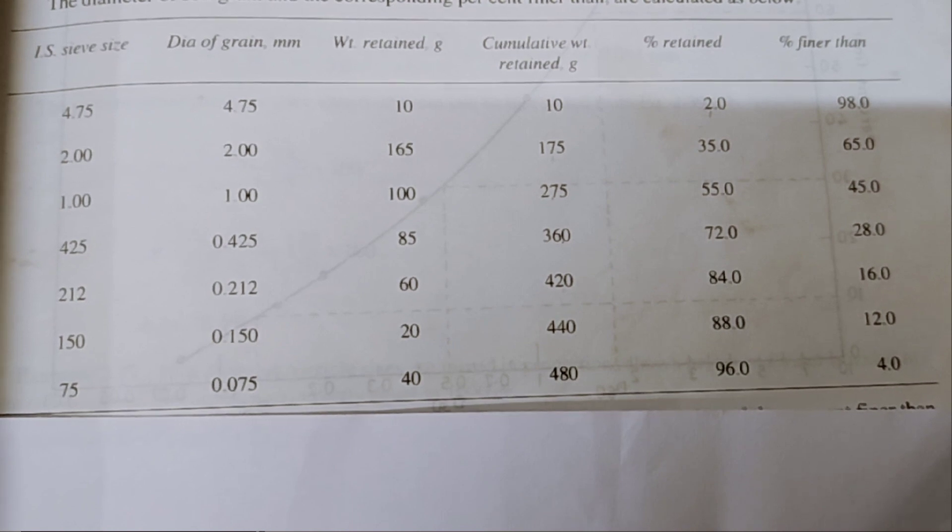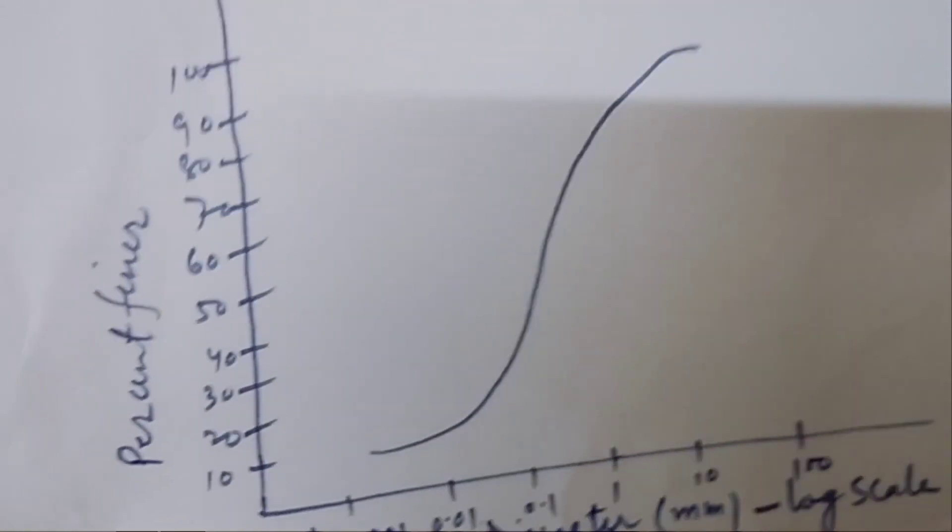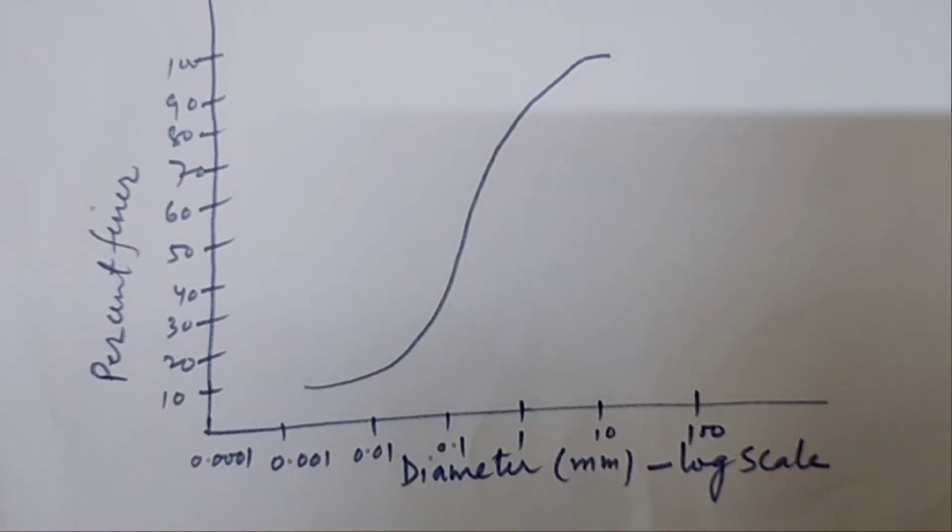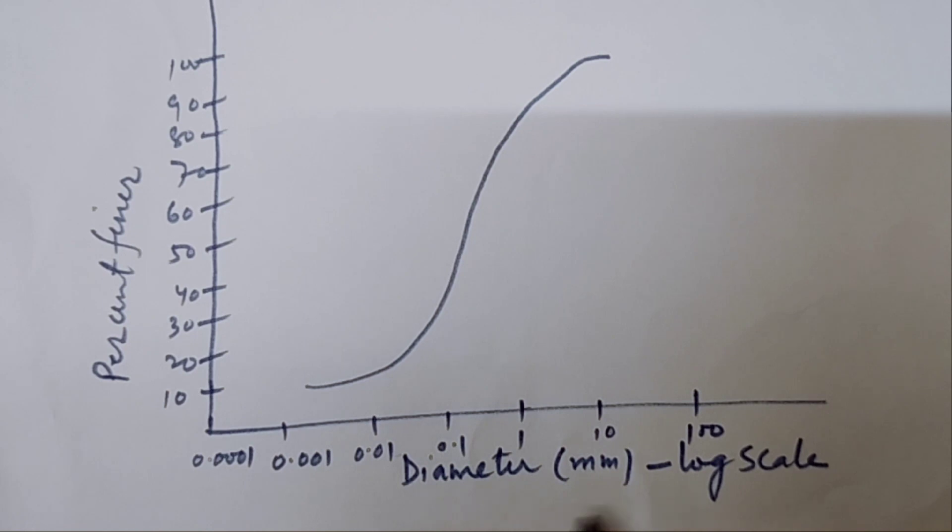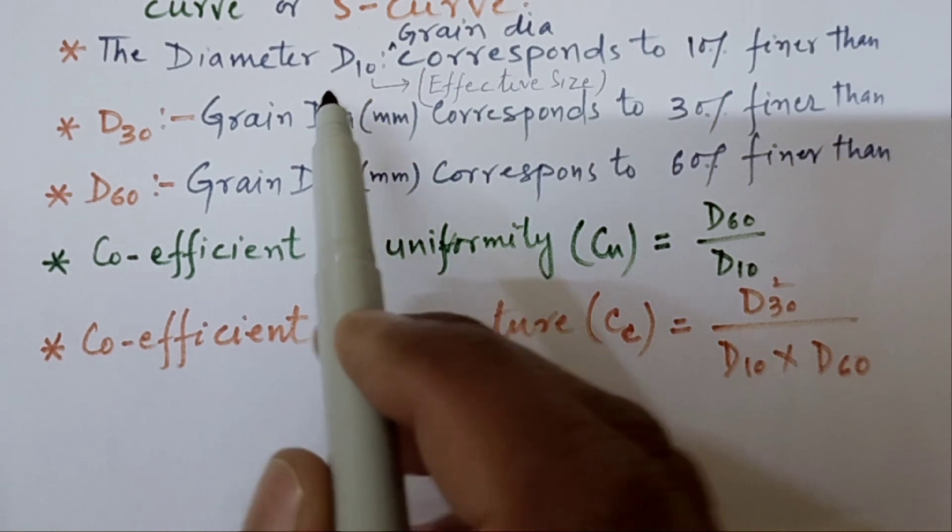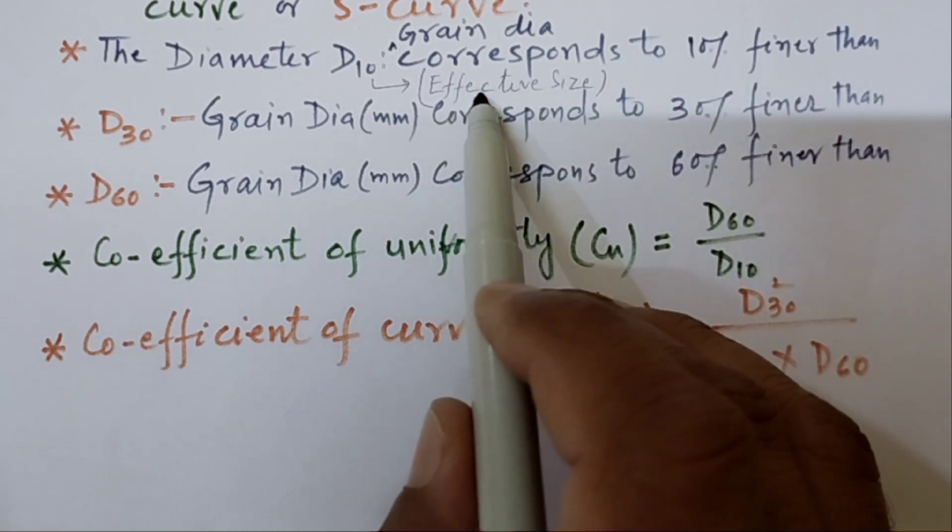This percent finer is plotted against the diameter and we get the curve that is called Grain Size Distribution curve. And from that Grain Size Distribution curve, we can calculate D10, D30, D60 and finally the coefficient of uniformity and coefficient of curvatures. This is the Grain Size Distribution curve. X axis diameter, Y axis percent finer. And X axis will be in log scale. The diameter D10 is Grain diameter corresponding to 10% finer. This is also called effective size.